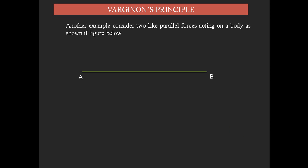On AB, a straight line is a body on which two like parallel forces are acting. That is F1 and F2 parallel to each other acting upward. For these two forces, the resultant force acts in between the two forces. I am assuming at a point C the resultant force is acting.